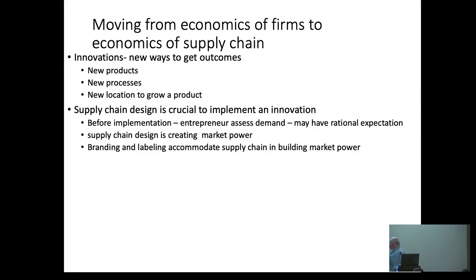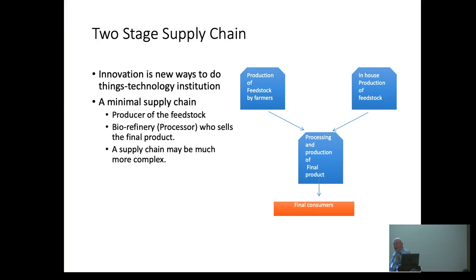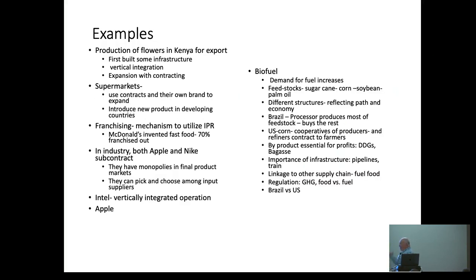You really need to move from the economics of the firm to the economics of supply chains. The key point is how you design a supply chain. Generally, when you have a product today, you have some sort of feedstock or intermediate input, processing, and final consumer. You can make it more complex, but generally you have to solve an optimization problem: how much to produce, how much input to produce in-house, how much to buy from others, and you take into account processing costs.